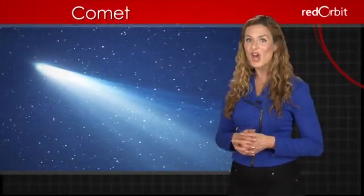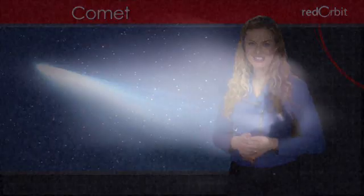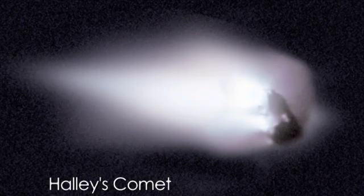The first comet whose period was known was Halley's Comet. Its period is 75 years. Halley's Comet last traveled through the inner solar system in 1986.